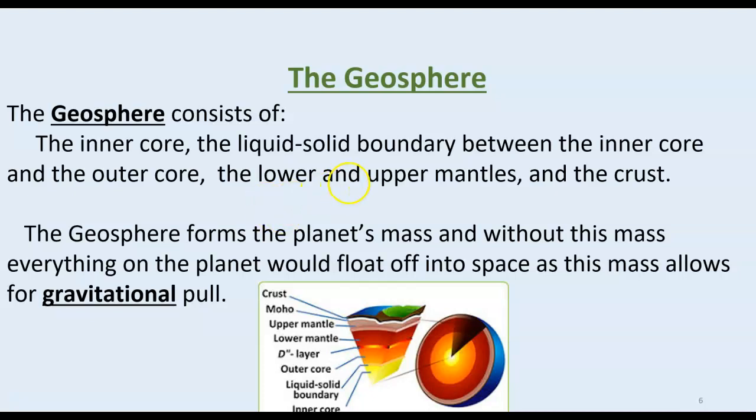The geosphere actually forms the planet's mass. Without that mass, everything on the planet would basically just float out into space. The gravitational pull from what was once initially a small mass eventually grew larger and pulled in more large chunks of what are now making up our earth.